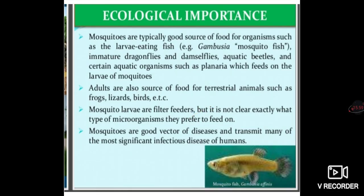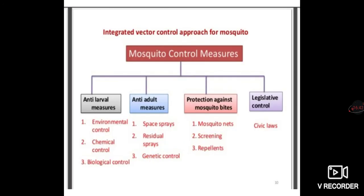Ecologically, mosquitoes are a good source of food for other organisms - mosquito larvae are eaten by fish, and adults are also a food source for terrestrial animals such as frogs, lizards, and birds. Mosquito larvae are filter feeders, though it is not exactly clear what microorganisms they prefer to feed on. Mosquitoes are important vectors that transmit many of the most significant infectious diseases to humans.